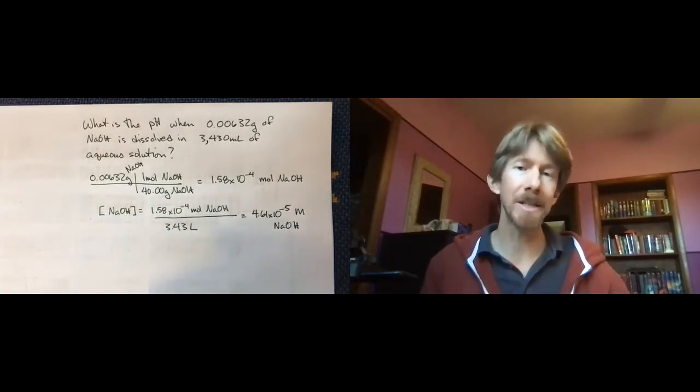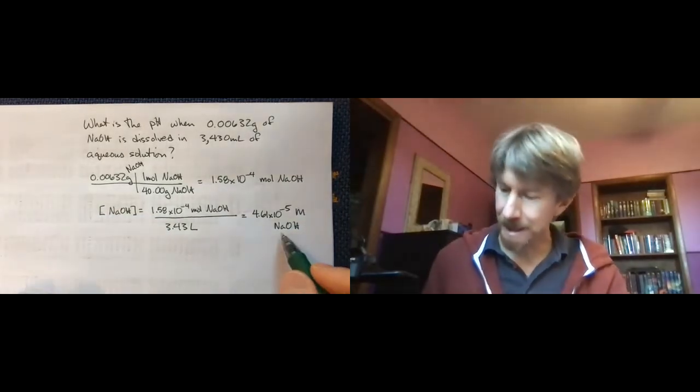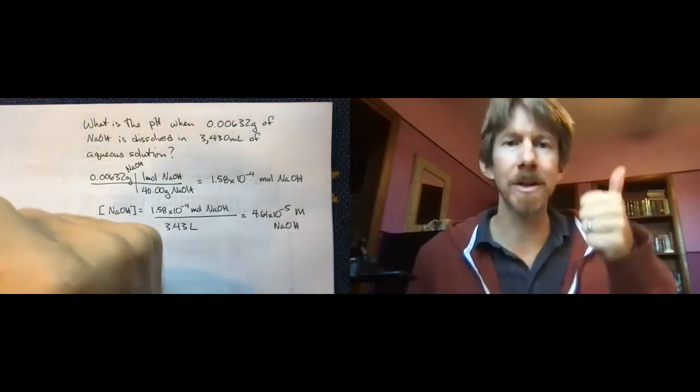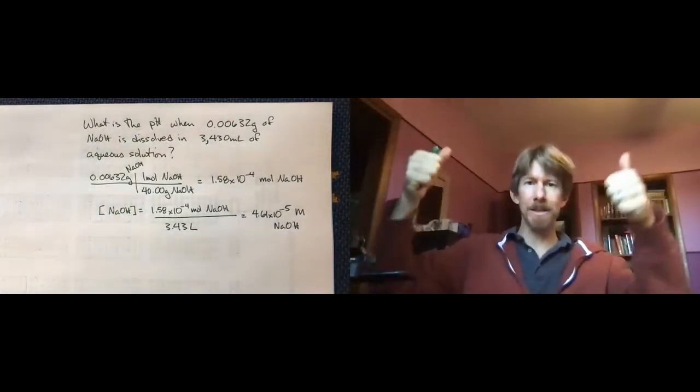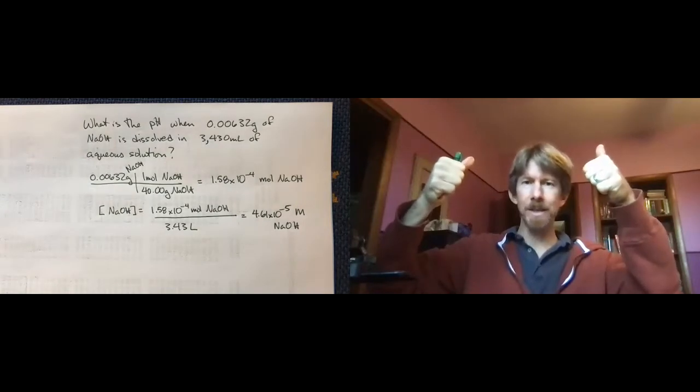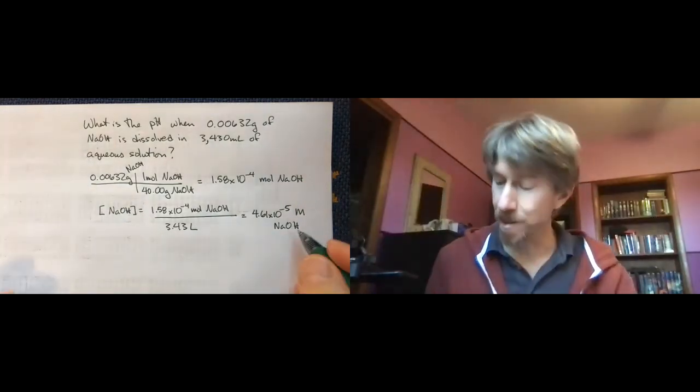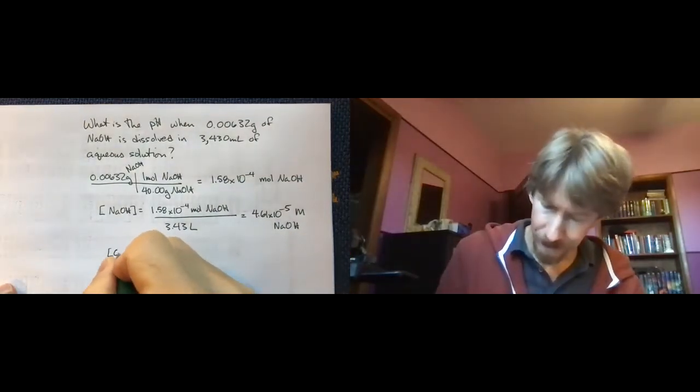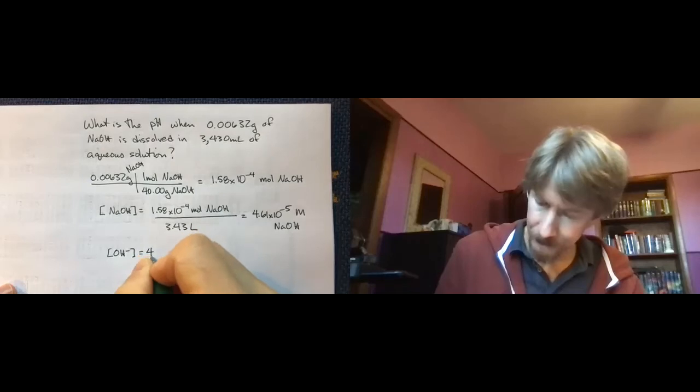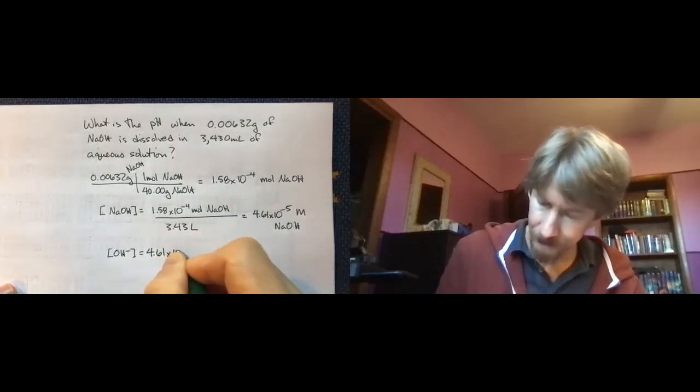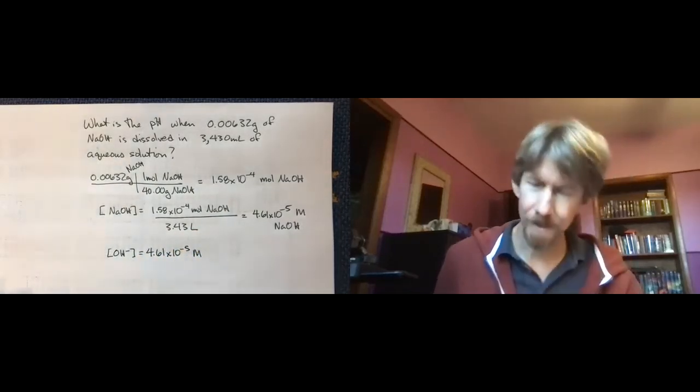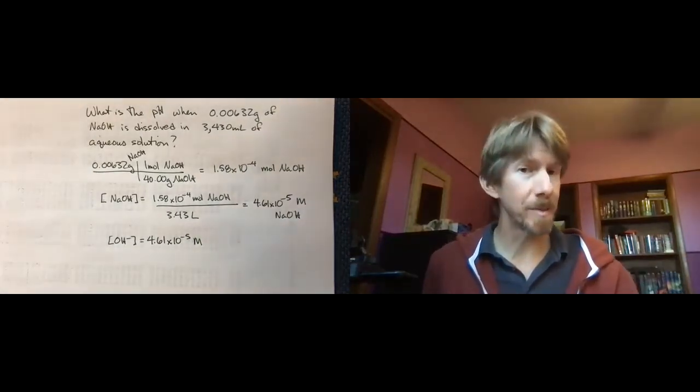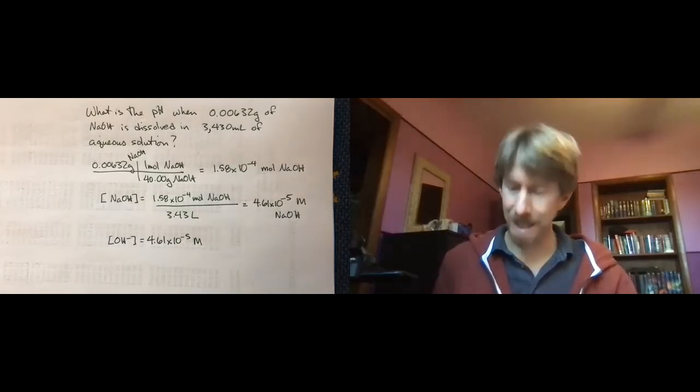Now, sodium hydroxide is a strong base. That means that this sodium hydroxide breaks up 100% into sodium ions and hydroxide ions, and they're floating around in the solution. That means that the concentration of hydroxide is this number as well. And it means we're in a basic solution, which means the pH has to be greater than 7.